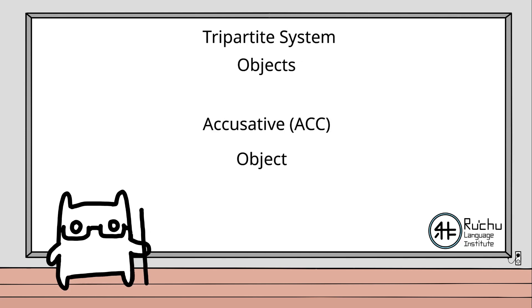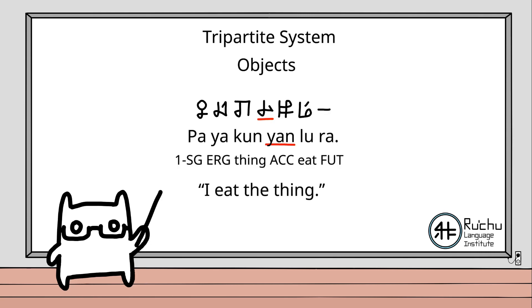Now, let's move on to objects. Objects of sentences are labeled using the accusative marker 야. Accusative markers are used for a sentence's direct object. An example of this is the sentence I eat the thing.